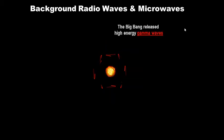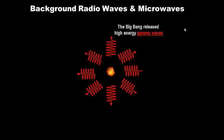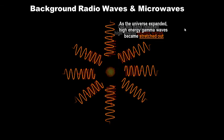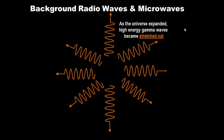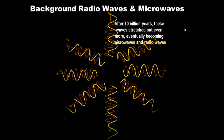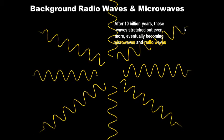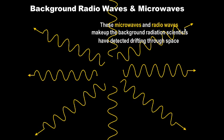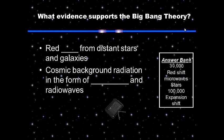The Big Bang released high-energy gamma waves — high-energy, deadly radiation. As the universe expanded, these high-energy gamma waves became stretched out, like an accordion. After 10 billion years, these waves became even more stretched out, eventually becoming microwaves and radio waves.